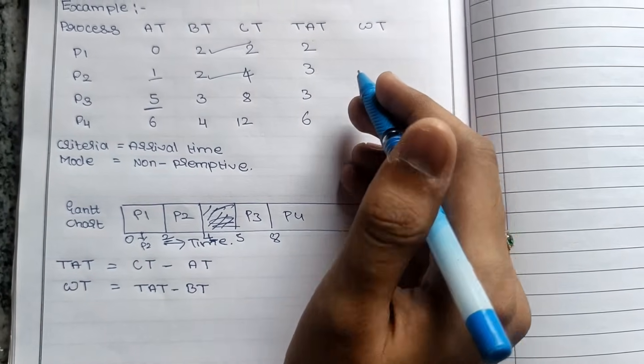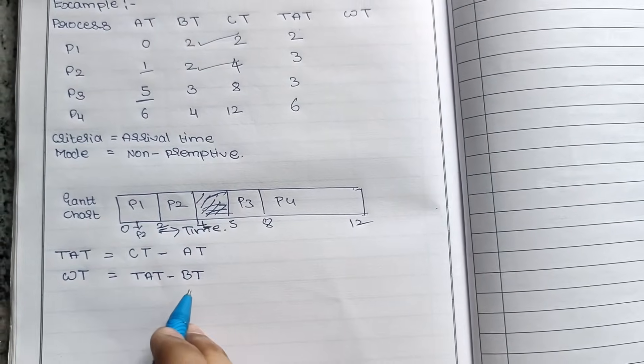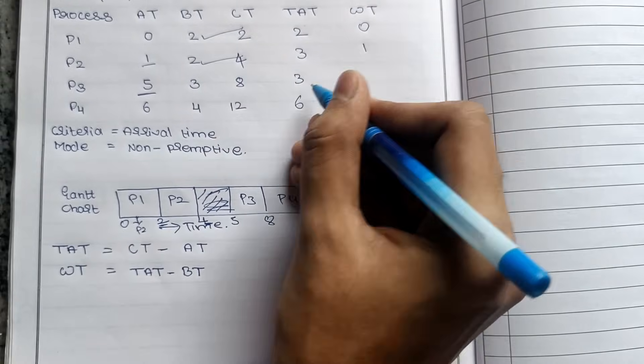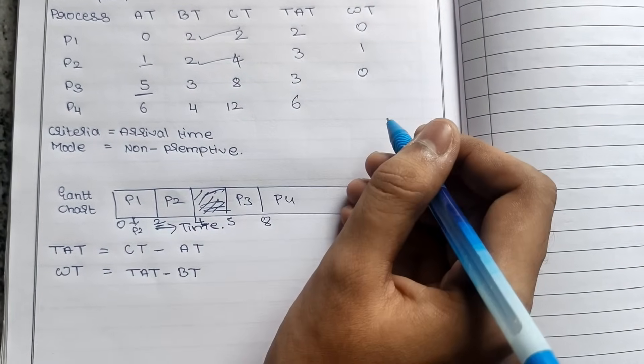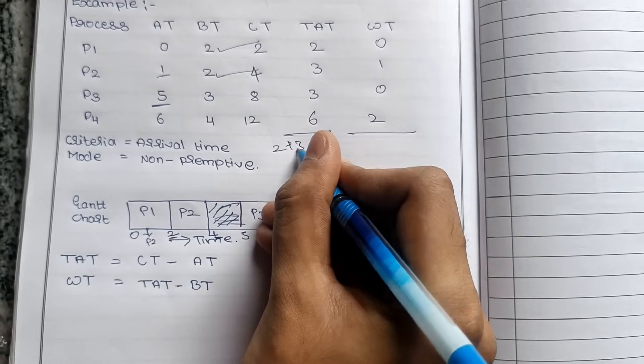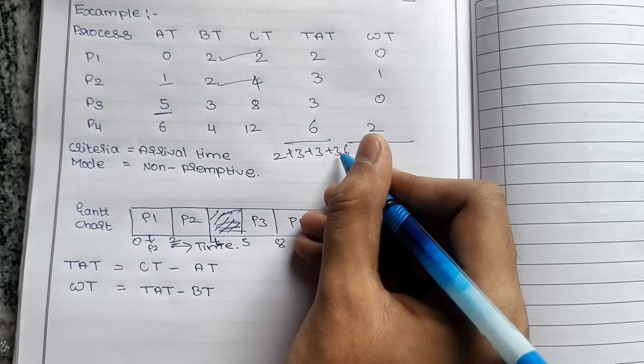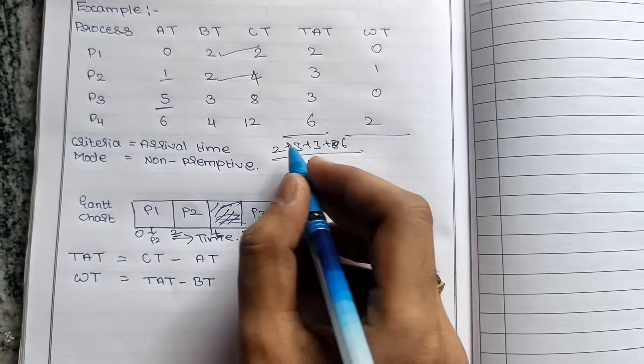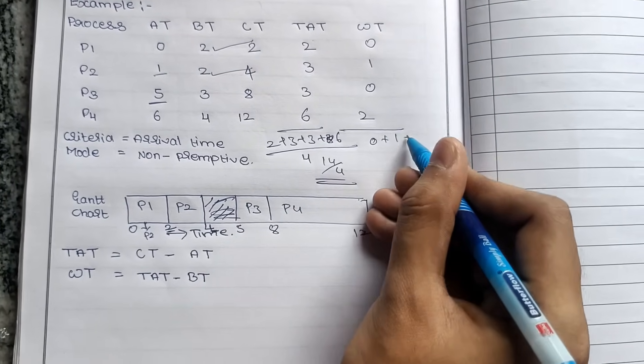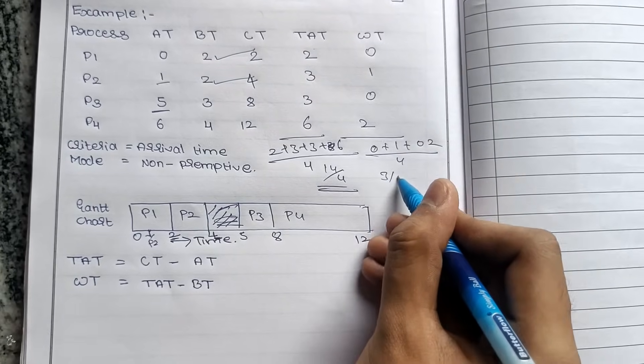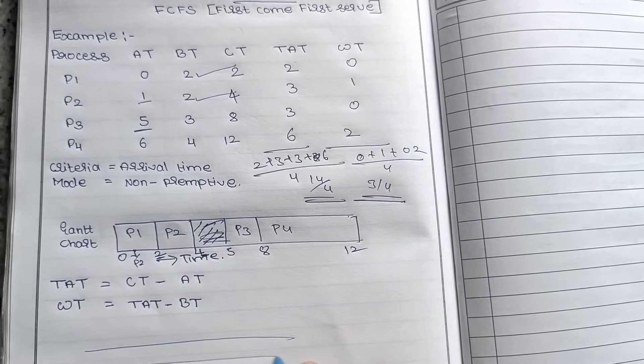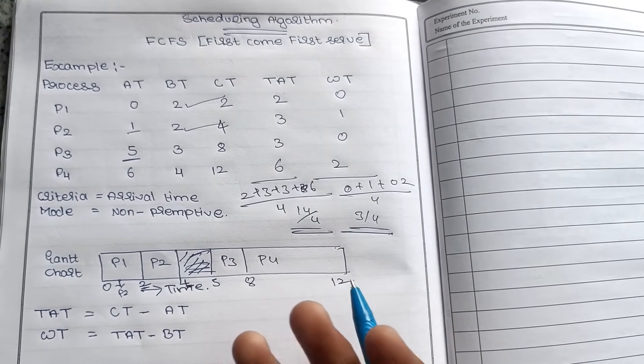Next we will calculate waiting time using turnaround time minus burst time. So TAT minus BT: 2 minus 2 is 0, 3 minus 2 is 1, 3 minus 3 is 0, 6 minus 4 is 2. Then we take the average of both turnaround time and waiting time. 2 plus 3 plus 3 plus 6 divided by 4 equals 14 by 4. Next, waiting time average: 0 plus 1 plus 0 plus 2, so 3 by 4.